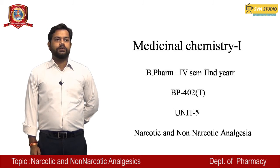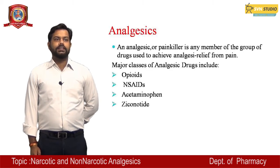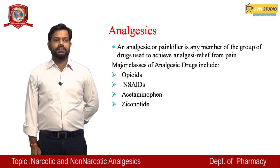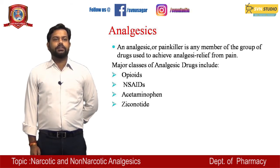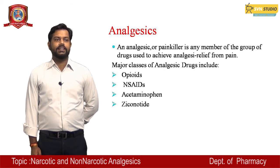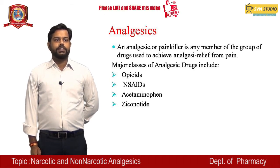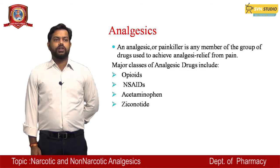An analgesic or painkiller is any member of the group of drugs used to achieve analgesia, which means relief from pain. Major classes of analgesic drugs include opioids, NSAIDs, acetaminophen, and ziconotide. NSAIDs are non-steroidal anti-inflammatory drugs.